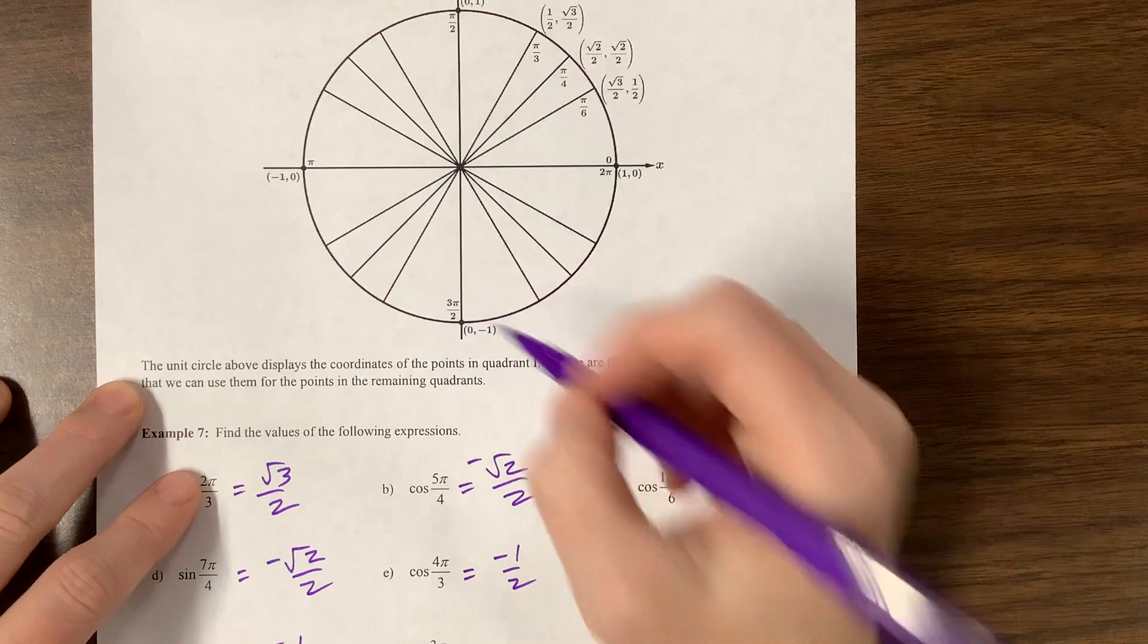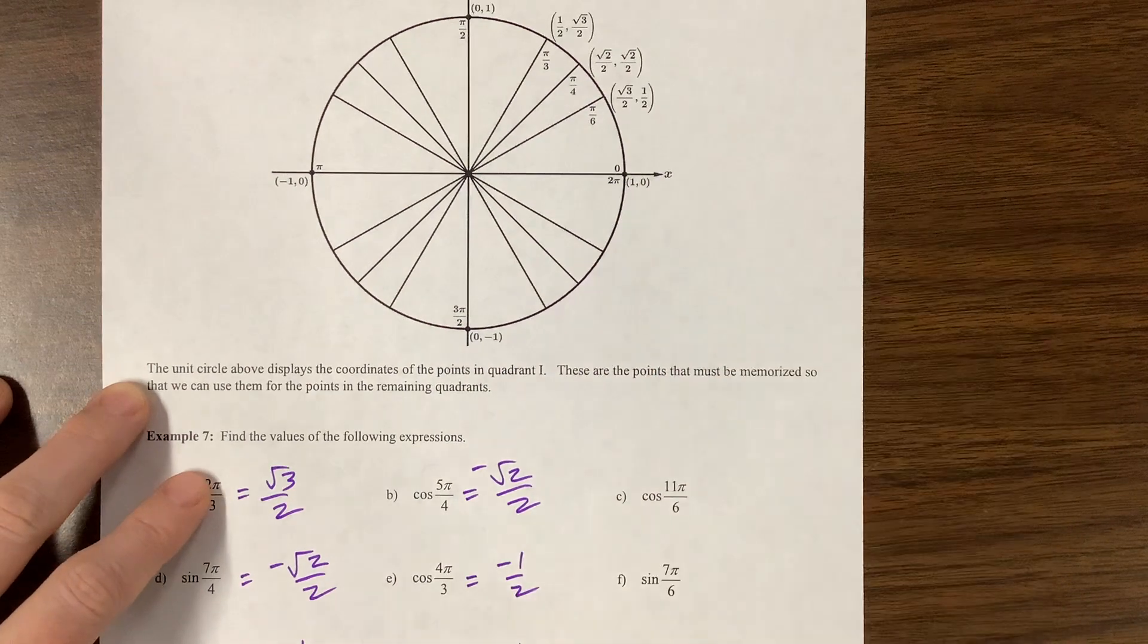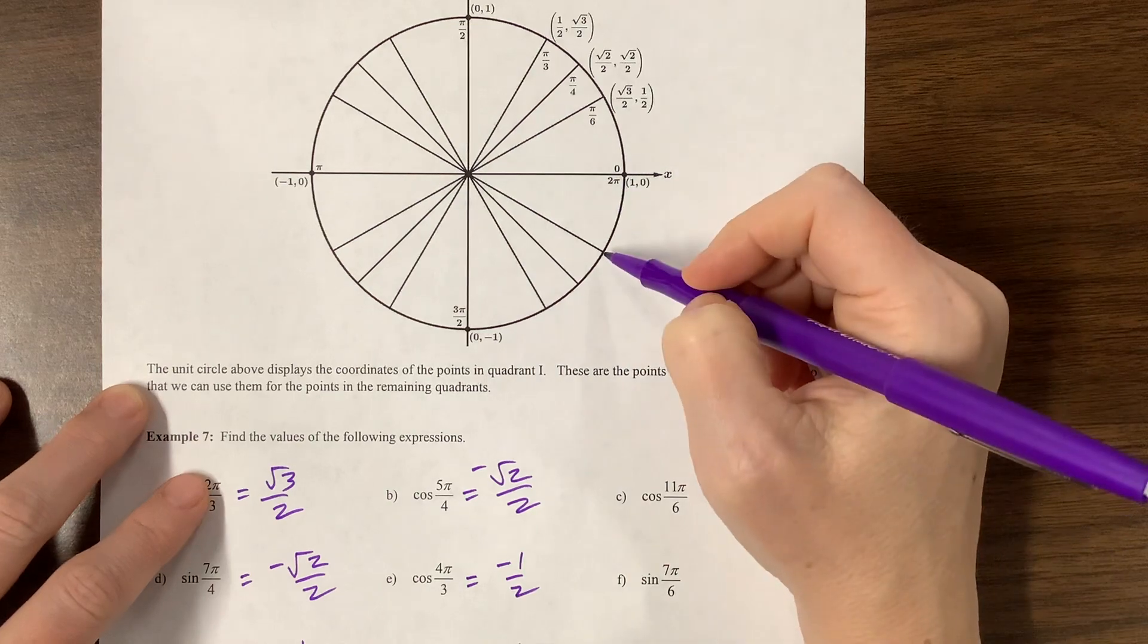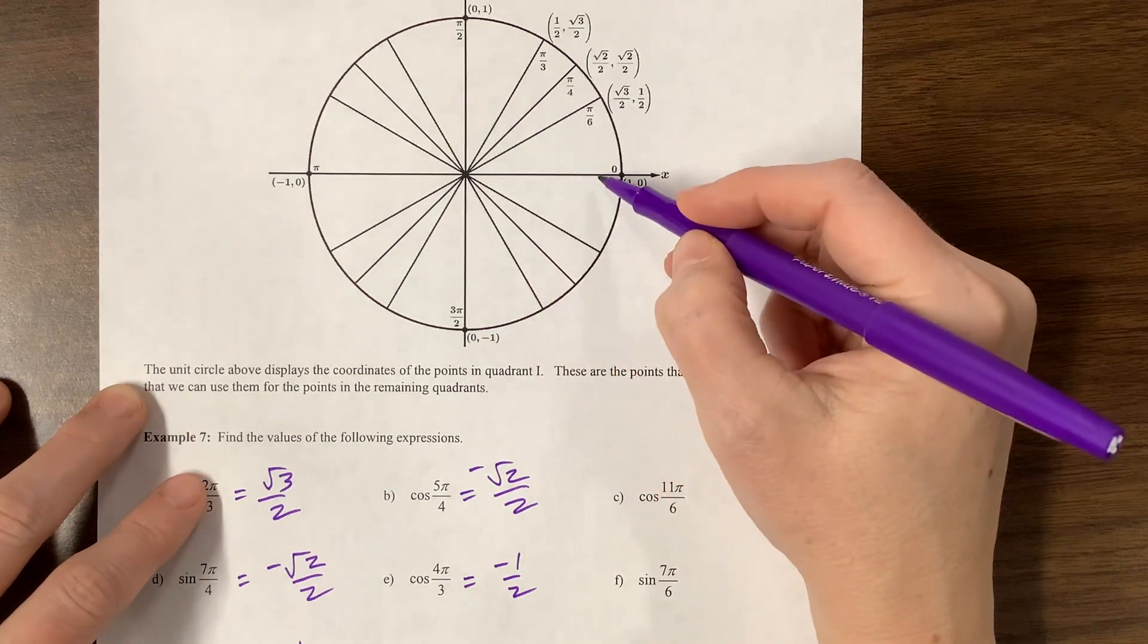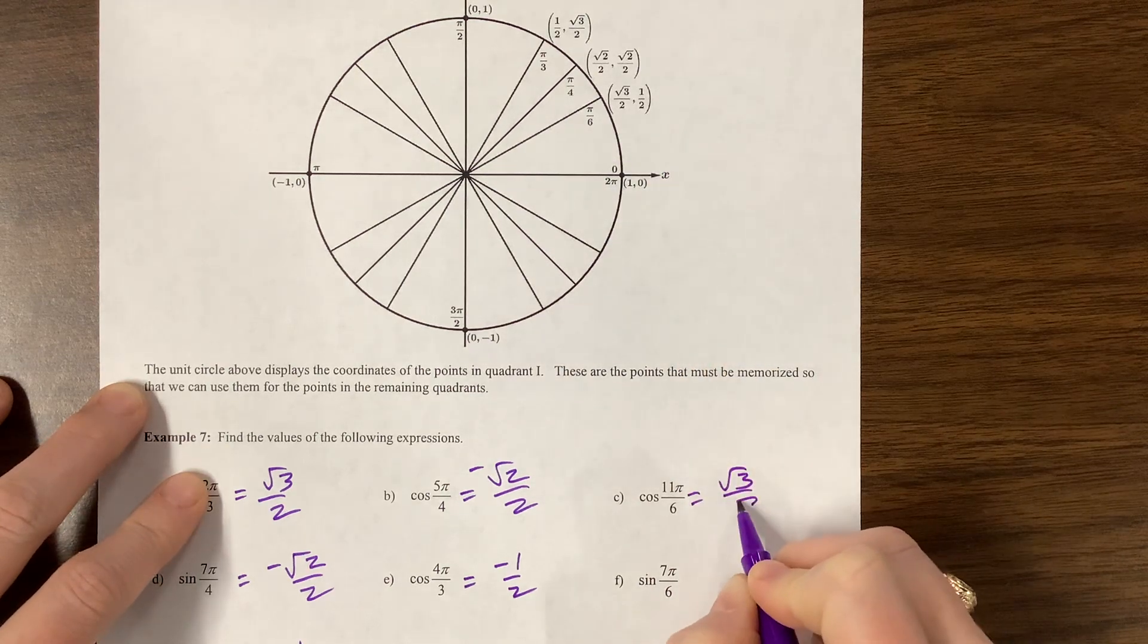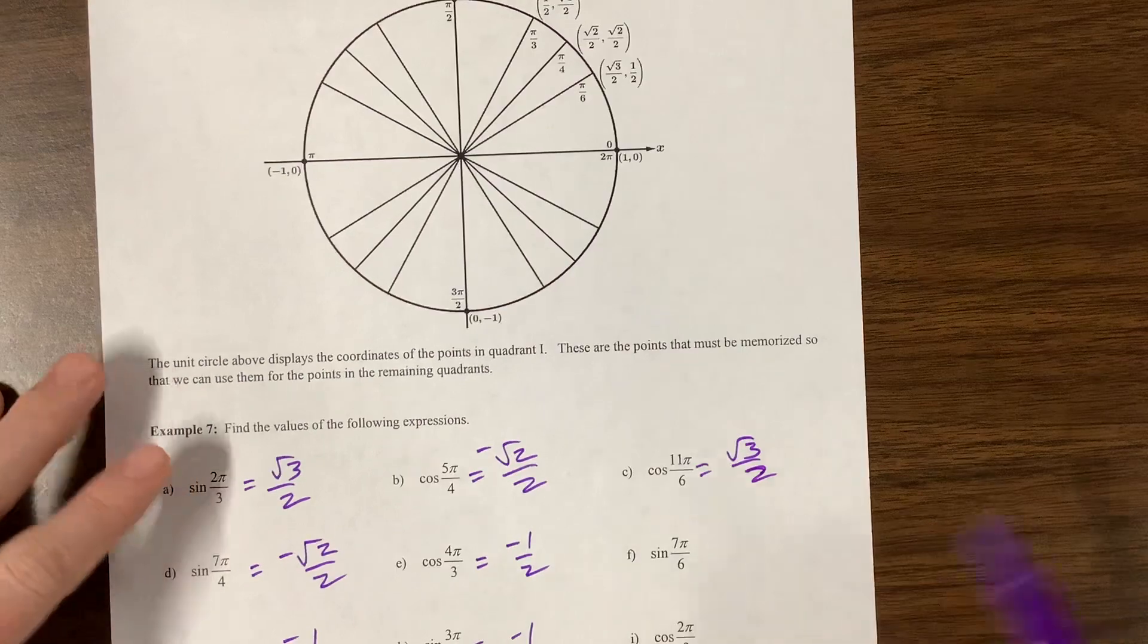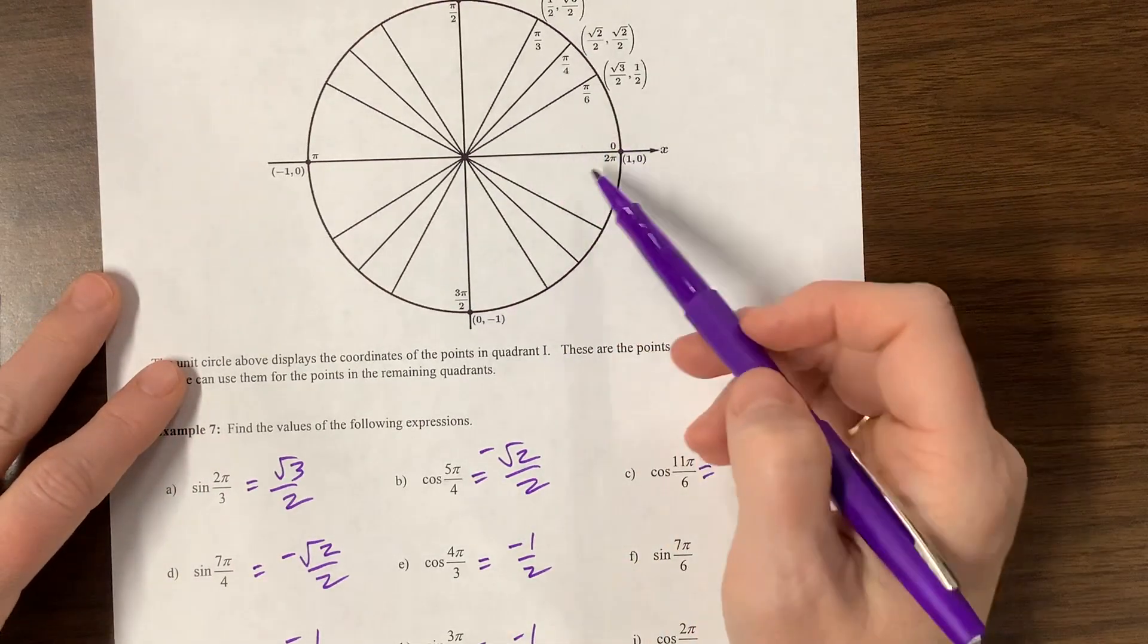Sine of 3 pi over 2. 3 pi over 2 is right here. Sine is the y value. That's negative 1. Sine of 0. Here's 0. Sine of 0 is 0. Cosine of 11 pi over 6. Here's 11 pi over 6. Cosine is the x. We went in the positive direction a lot, so that's a positive root 3 over 2. I started to look at my handwriting in the video, and I couldn't do what I was doing.